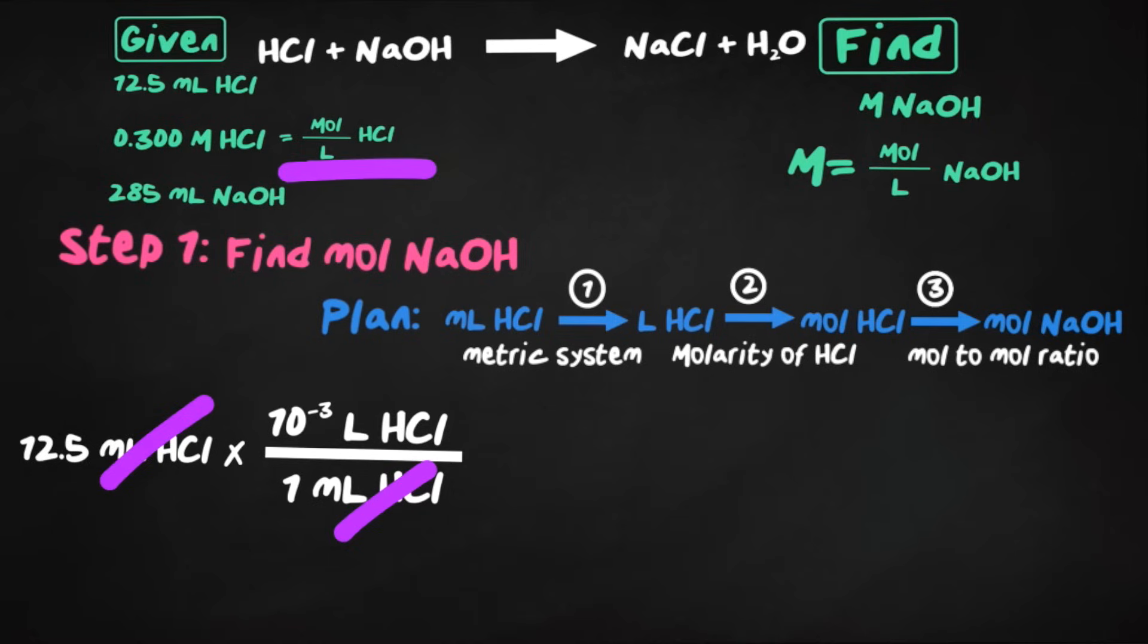Next step is to change this to moles of HCl using the molarity that was provided. So I'll put the 0.300 moles on top of HCl, and on the bottom would be one liter of HCl. The liters of HCl would then cancel, and we're now at moles of HCl. Now, we want to find moles of NaOH, so we're going to use a mole-to-mole ratio, and we'll take that from our balanced equation.